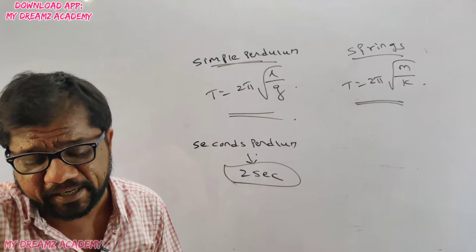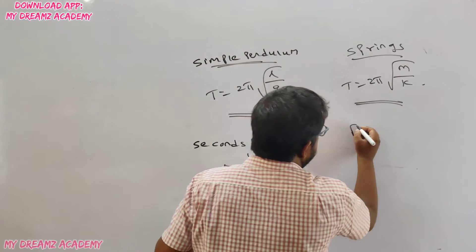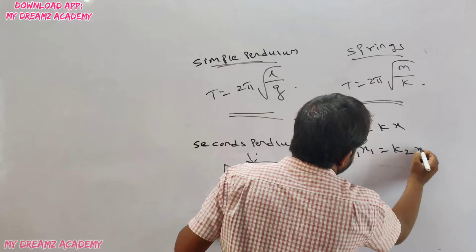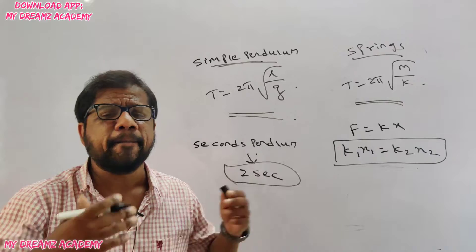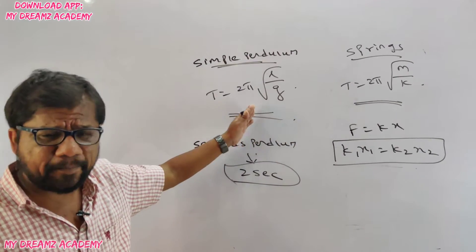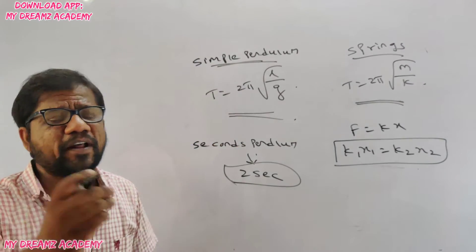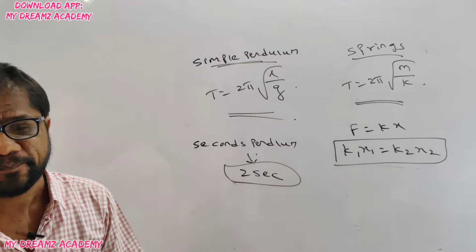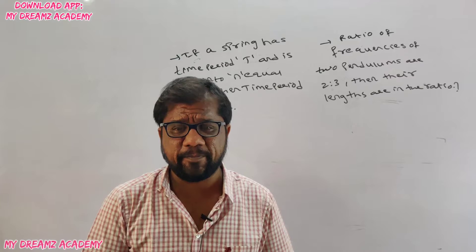When you come to springs, if you take the spring and apply the formula, the key relation is k₁x₁ = k₂x₂. This is the basic spring constant relationship. There will be direct substitution type questions as well as one or two tricky questions on time period — let's look at a few questions based on these things.